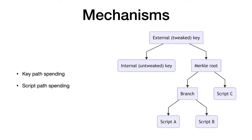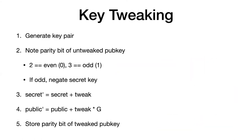Once you have that key pair constructed, there is one thing you have to do: if your public key is odd, you actually have to negate the secret key. This is only relevant if you're going to be doing key path spends later on. Negating simply means subtracting the private key value from the curve order — nothing complicated. So that is still your untweaked private key and untweaked public key.